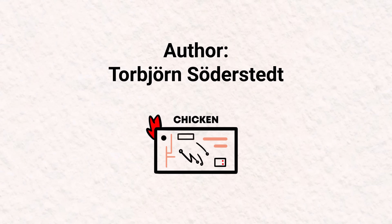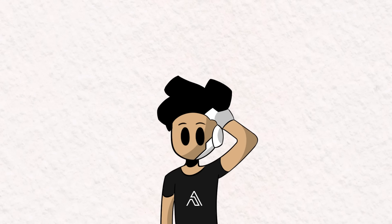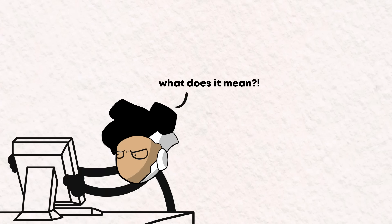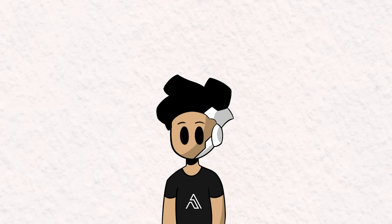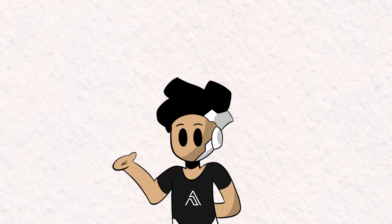This esolang was created by Torbjorn Sodestead, and in this language the word "chicken" is the only valid symbol. A Hello World program in Chicken looks like this. When I first saw this language, I was really thrown off by it — because when I first began learning programming languages, I'd always run into keywords I had trouble understanding because they'd always sound so complicated. Words like public static void main — that used to mess me up. So when I saw this esolang and noticed the only keyword it uses is "chicken," I was stumped. Because of how silly this language looked, I had the impression it wasn't all that complicated. I was wrong.